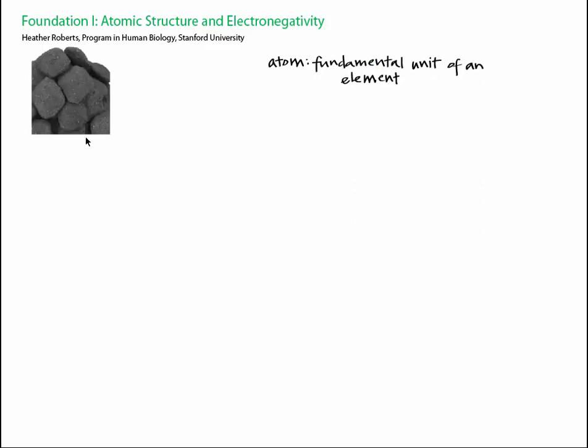All matter is made up of atoms. An atom is the fundamental unit of an element. Take charcoal, for example, which is made of carbon. Here's what an atom of carbon looks like. You can't break an atom of carbon apart and still have something characteristic of carbon.